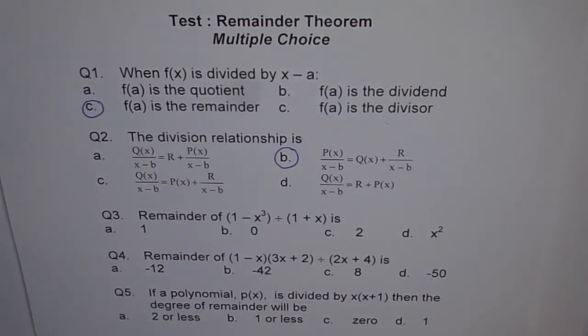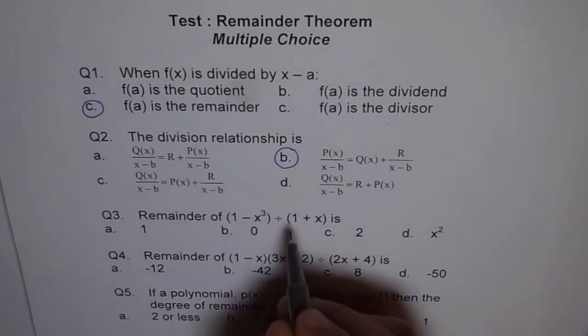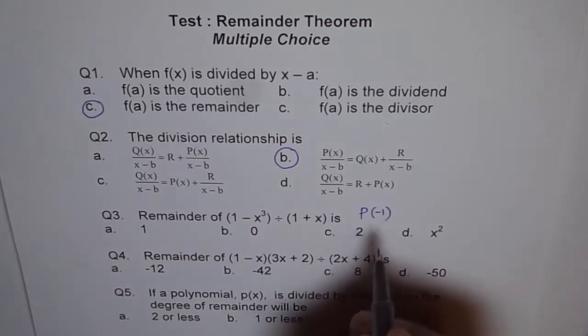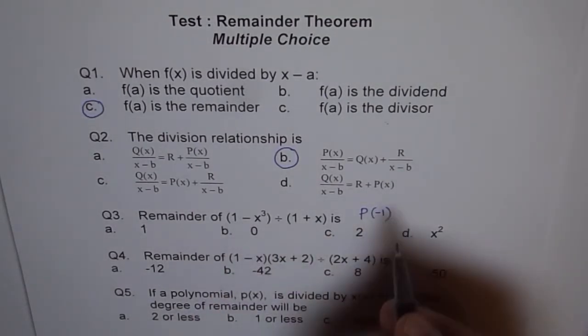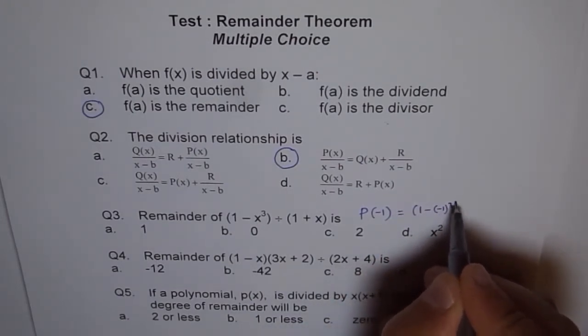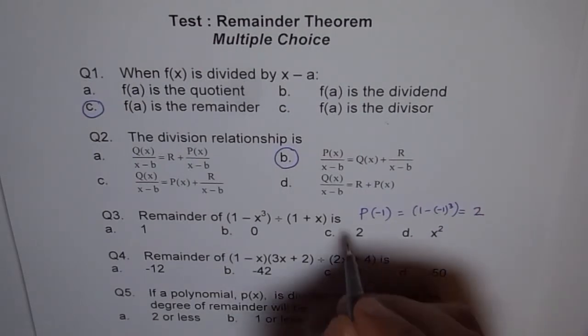Question 3. Remainder of 1 minus x cubed divided by 1 plus x. Well, the solution is kind of given in question 1. So when you divide this by this, what should you get? You should try the value of this function at minus 1, right? p of minus 1. So if I put minus 1 here, then I get 1 minus minus 1 cubed, right? Minus 1 is negative. My negative, negative becomes positive, right? So you get 2. Therefore, the solution is 2.